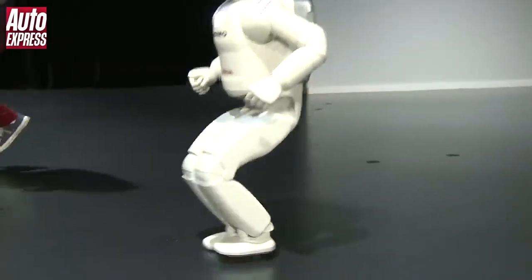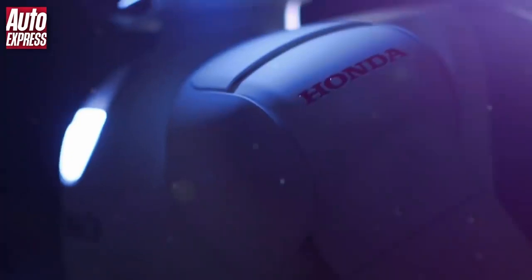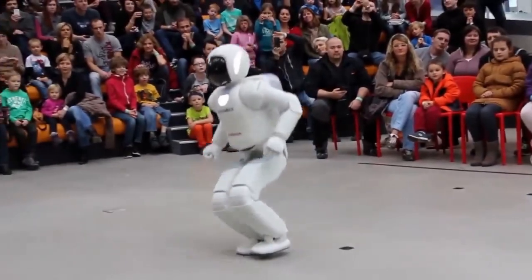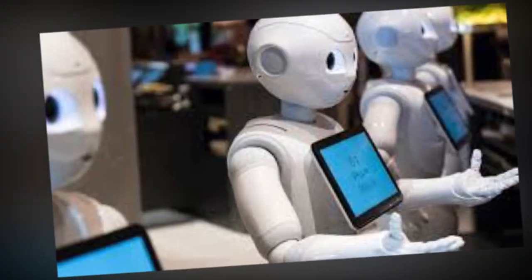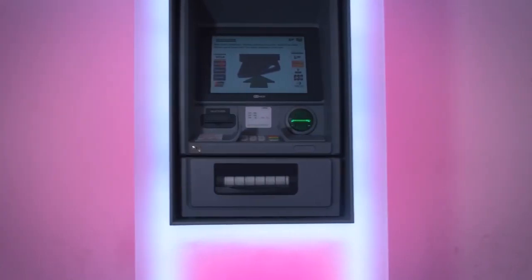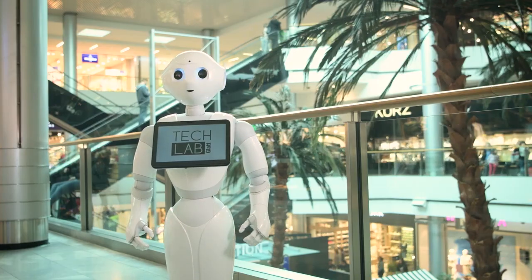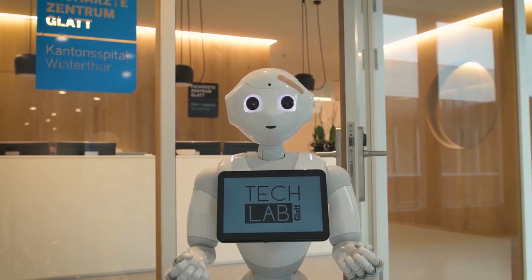Some examples of advanced Japanese humanoid robots include Asimo. Asimo, developed by Honda, is one of the most famous humanoid robots in the world. It stands four feet tall and is capable of walking, running, jumping, and even dancing. Pepper, developed by SoftBank Robotics, is designed to interact with humans in a social setting. It can recognize faces and emotions and engage in conversations with people.